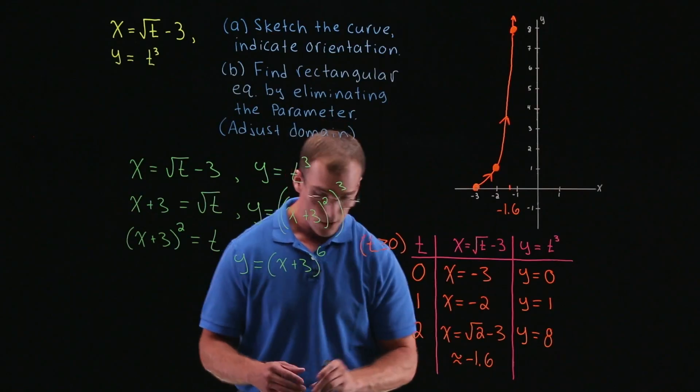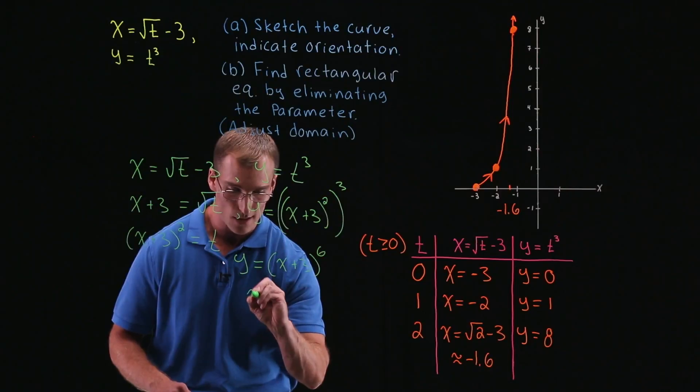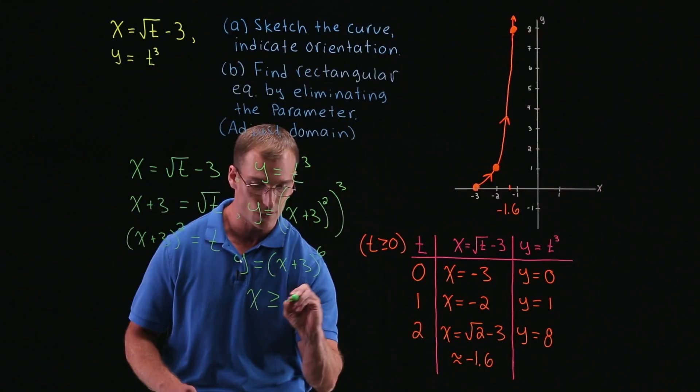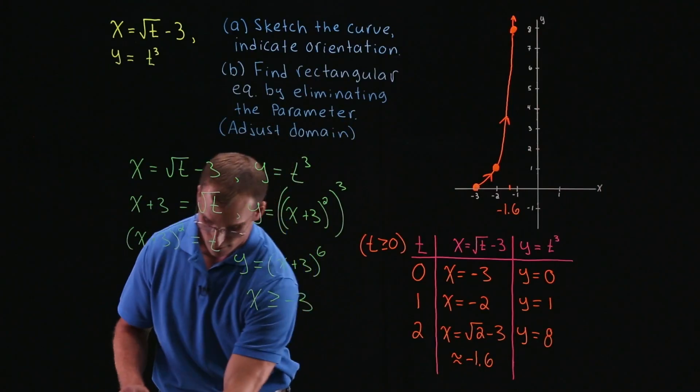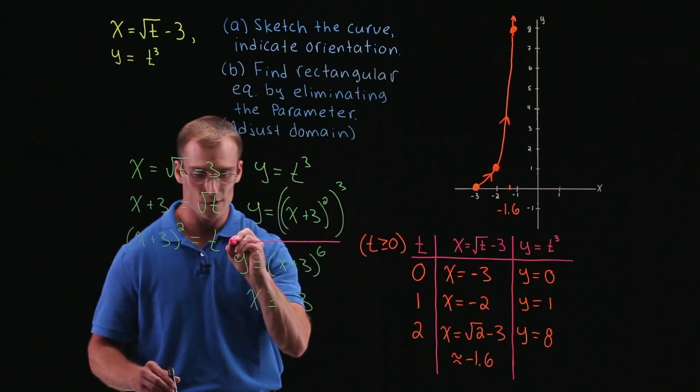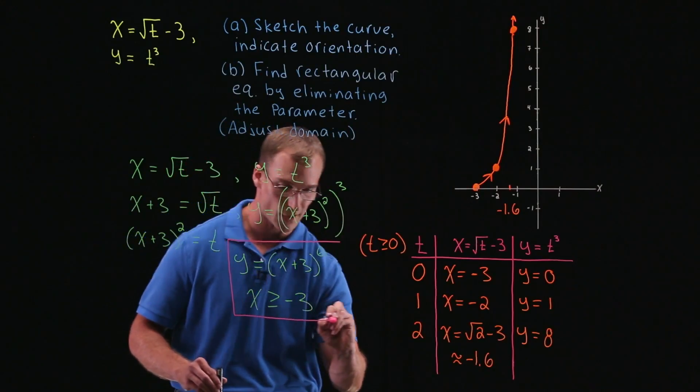So that's going to tell us that our domain x, if t is greater than or equal to 0, x is going to be greater than or equal to negative 3. So there's the rectangular form of our equation with our domain from our given parametric equations.